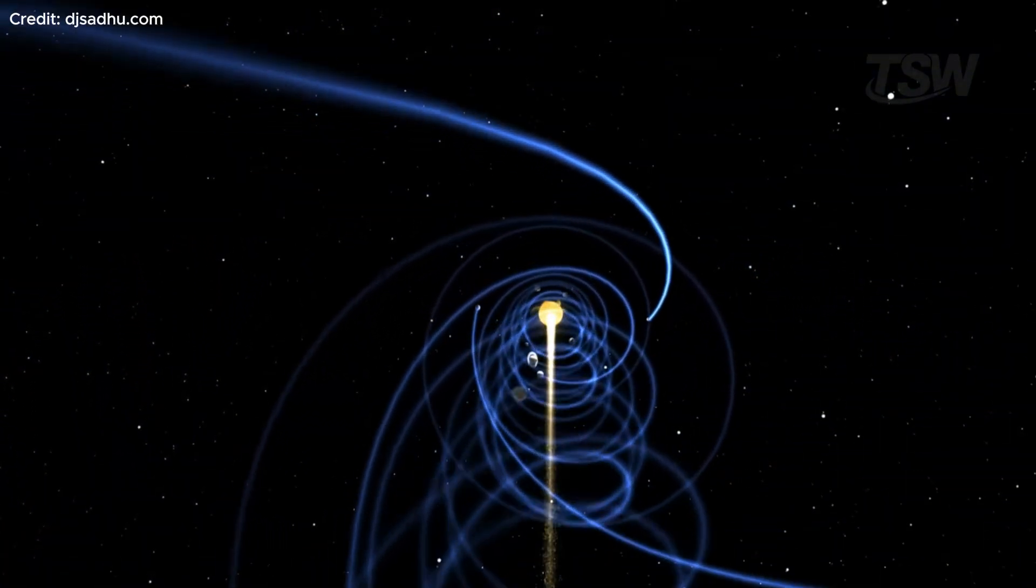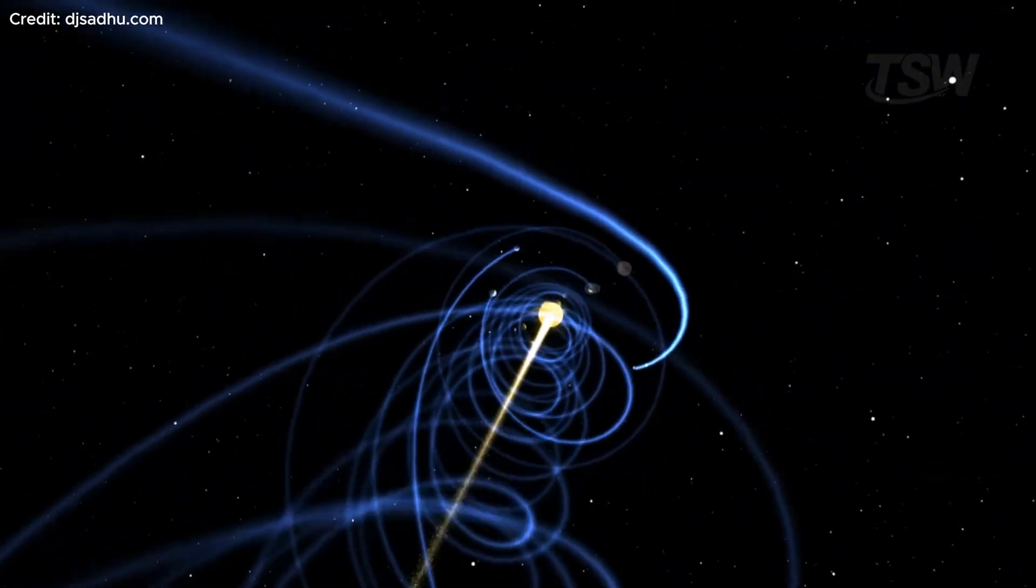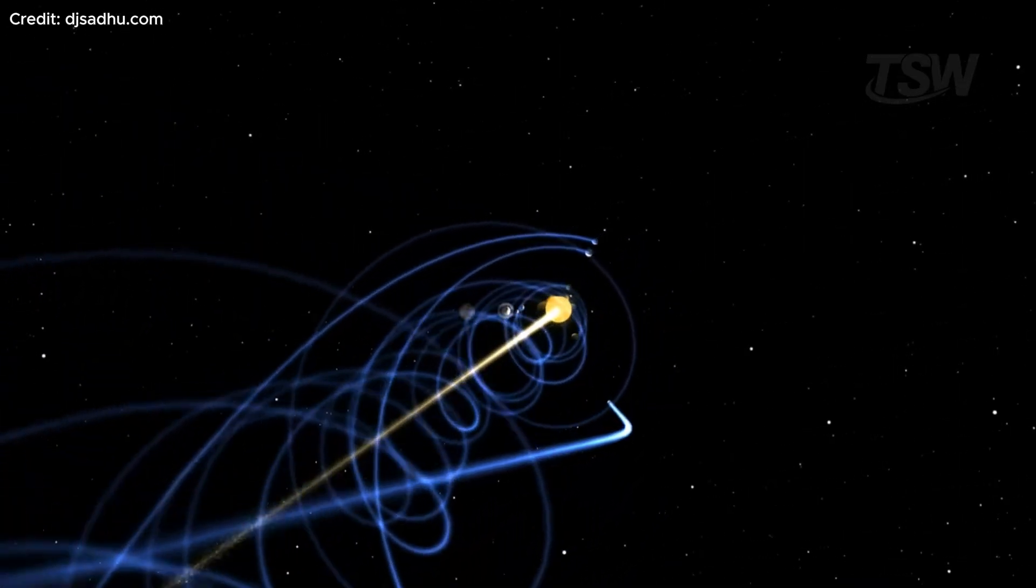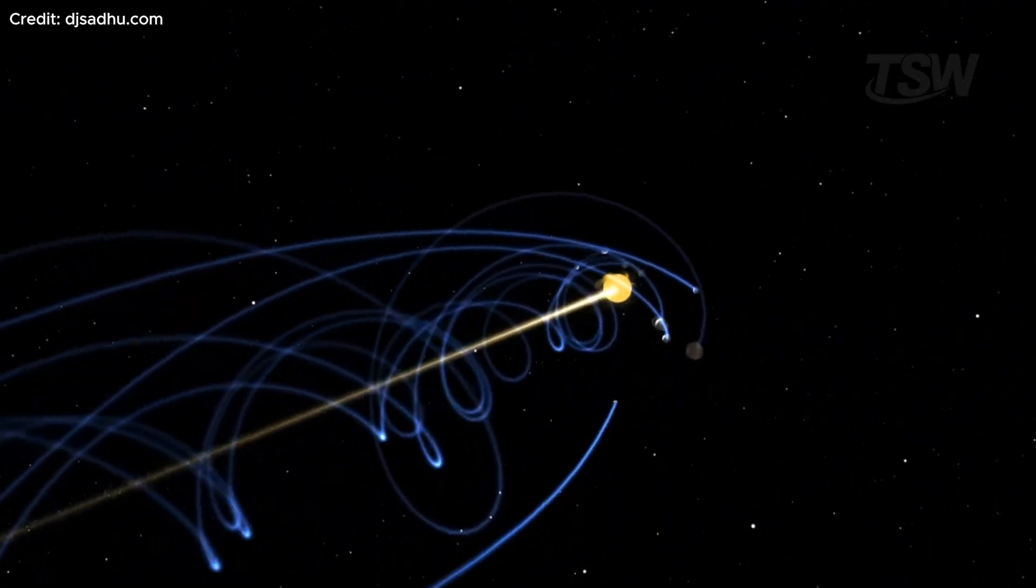If the sun is in motion, then the planet's orbits aren't closed circles. They turn into helical trajectories, like stretched springs in space.